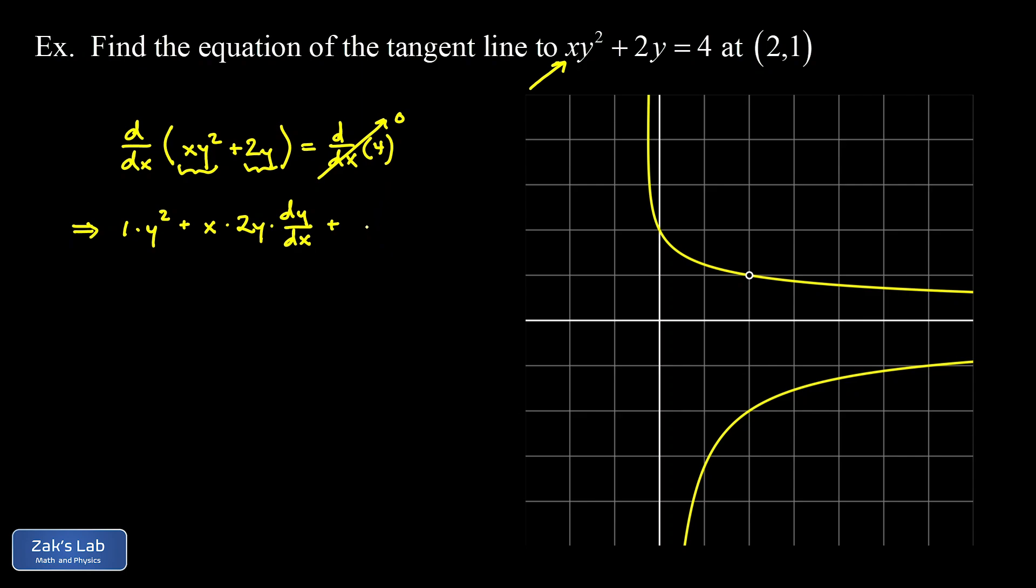Now this 2y over here is the simpler part. To take the x derivative of 2y I just get 2 times the derivative of y with respect to x which again is just dy/dx. And on the right hand side we have a 0.